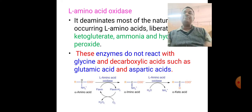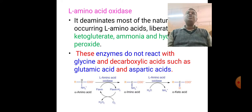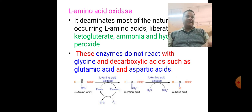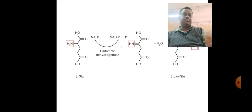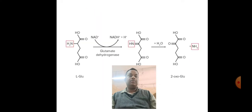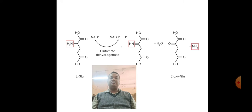Students, remember that these enzymes cannot act on L-amino acids such as glycine, glutamic acid, and aspartic acid because they are dicarboxylic acids. A picture depicts how L-glutamate is converted into alpha-ketoglutarate, with release of ammonia and formation of H2O2.